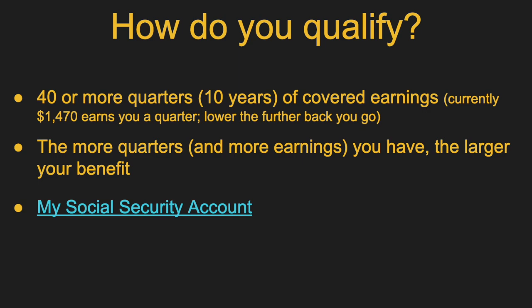First, how do you qualify? At the high level, you need 40 or more quarters — which is 10 years of covered earnings where you paid into Social Security. It's not a particularly high bar; right now it's $1,470 in a quarter to get that quarter, and that number decreases the farther back you go. The more quarters and earnings you have, the larger your benefit will be. Log into your Social Security account online and you can download the statement; it'll tell you how many quarters you have and list all your reported income, and give you an estimate of your benefit.